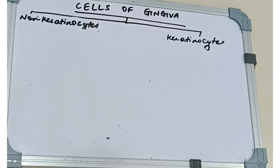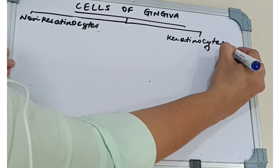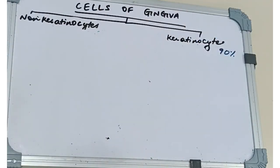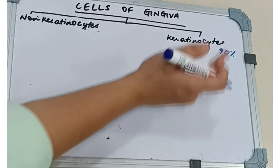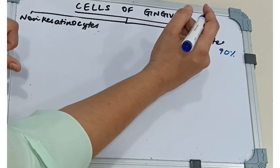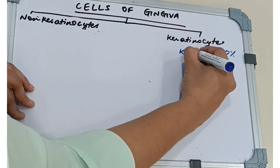Cells of gingiva are divided into keratinocytes and non-keratinocytes. The keratinocytes comprise 90% of the oral epithelium. They contain pigment perinuclear granules present only in these cells and not in any other cells of the epithelium. As we have seen earlier, keratinization occurs from the basal layer to the corneal layer and terminates in the formation of keratin.